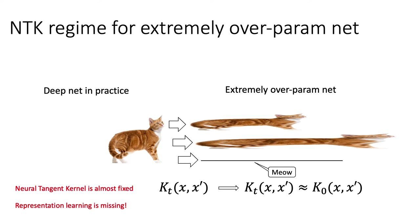But from the point of view of real-world deep networks, representation is a critical aspect. Without that, we are far from a satisfactory theory for deep learning.